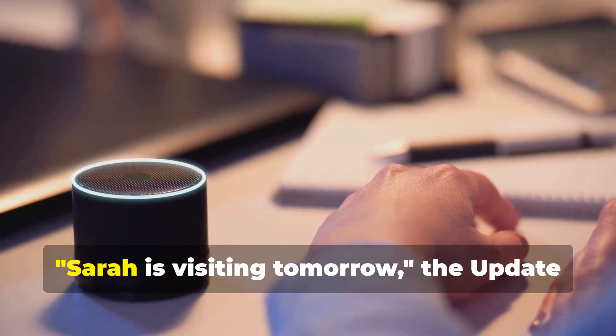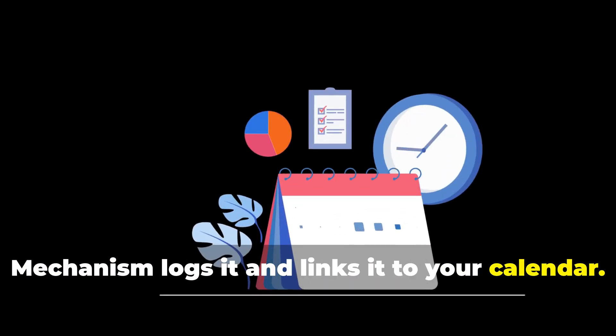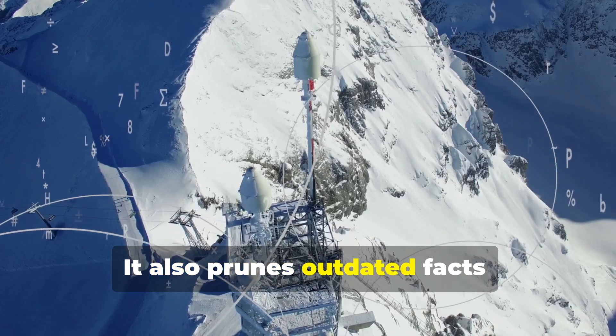If you tell your smart home Sarah is visiting tomorrow, the update mechanism logs it and links it to your calendar. It also prunes outdated facts.